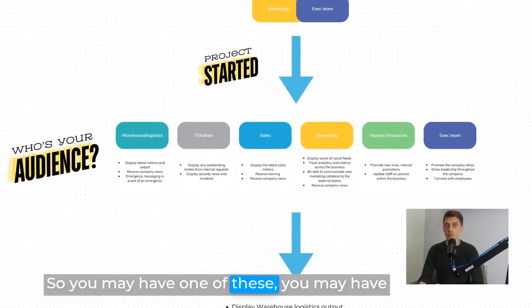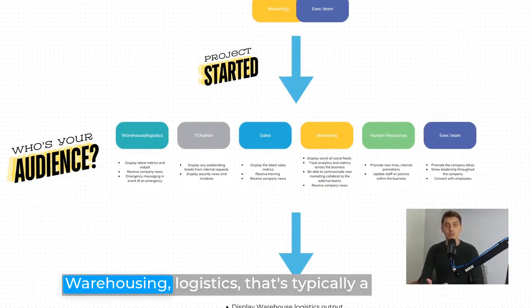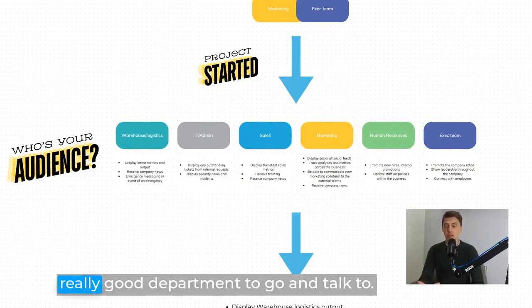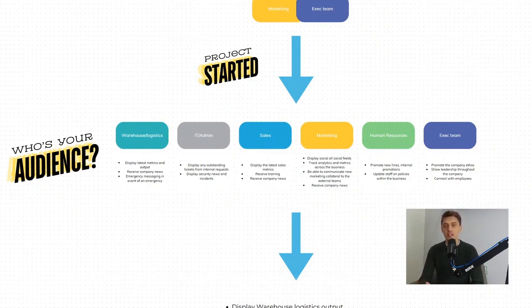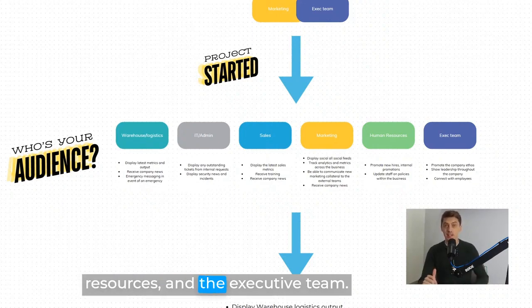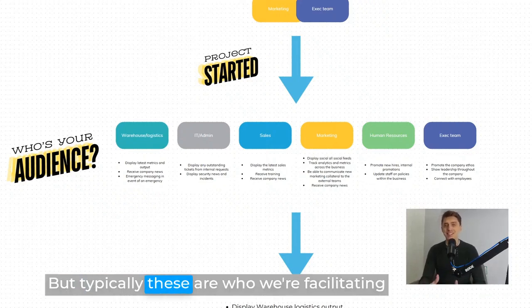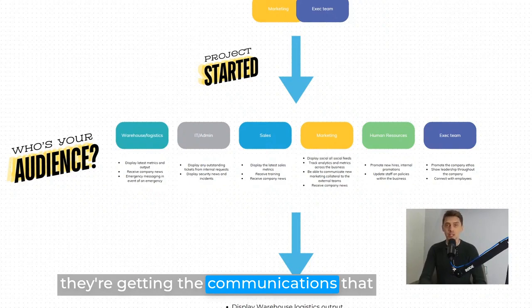You need to understand who your audience is. You may have one of these departments, all of them, or just a few. Warehousing and logistics — that's typically a really good department to go and talk to, where there's going to be real value from a communications perspective. IT and administration, sales departments, marketing departments, human resources, and the executive team. These are who we're facilitating conversations with to make sure they're getting the communications they need from their digital signage.